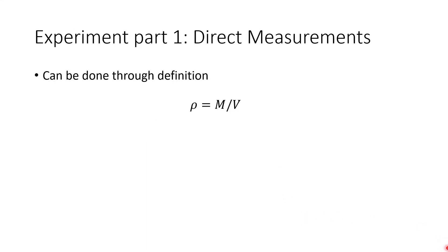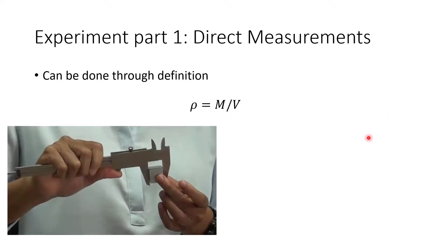So let's go on to the experiment. Experiment Part 1: you do the direct measurement of density. Since you know the definition of density, you just need to know the mass and the volume of whatever you are trying to measure. In this part, you're going to be measuring the dimensions of the materials. You're going to use a vernier caliper in order to measure the size, and use those sizes to calculate the volume by multiplying each dimension together.